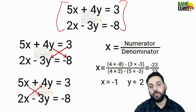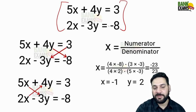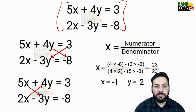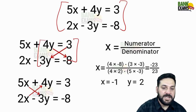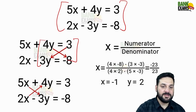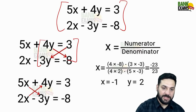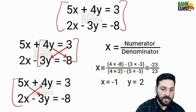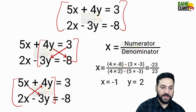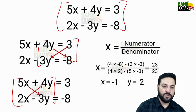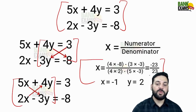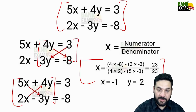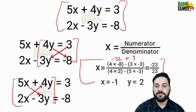How to solve this simply? Take the coefficient of y: 4 multiplied by -8, minus -3 multiplied by -3 — this is the numerator. For the denominator, we do 4 multiplied by 2 minus 5 multiplied by -3. This is the simple way to calculate the value of x.